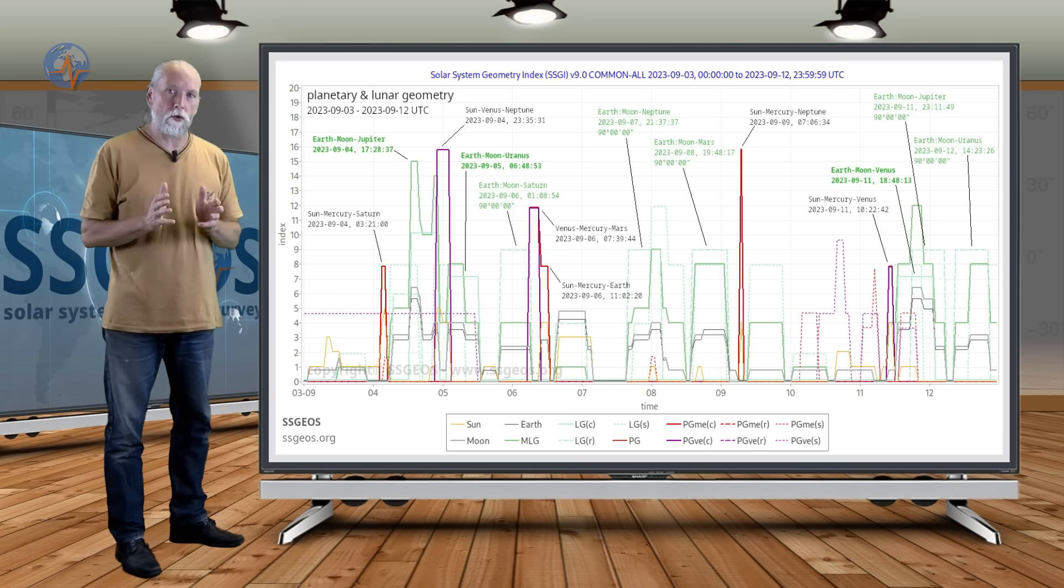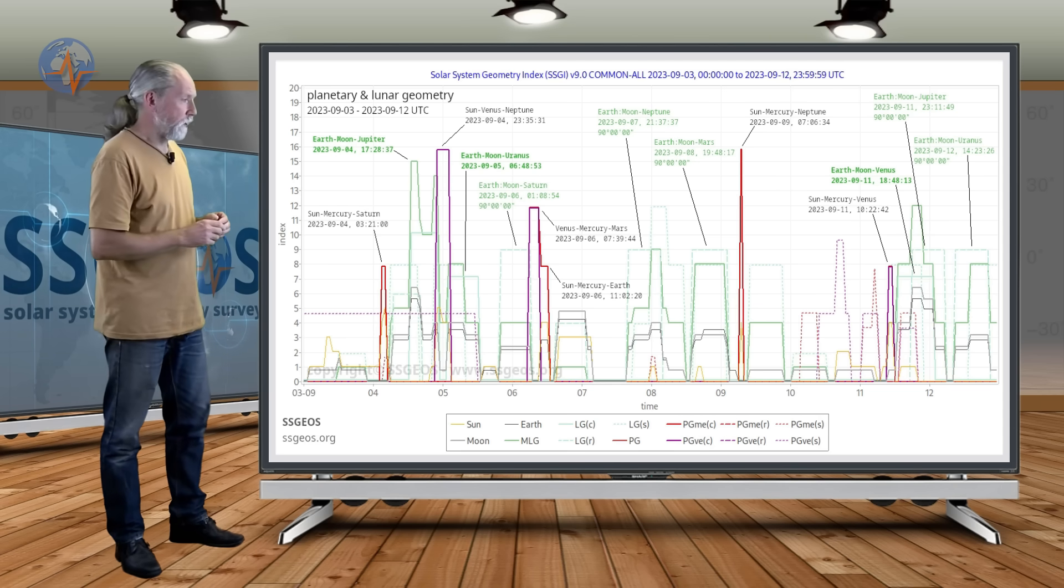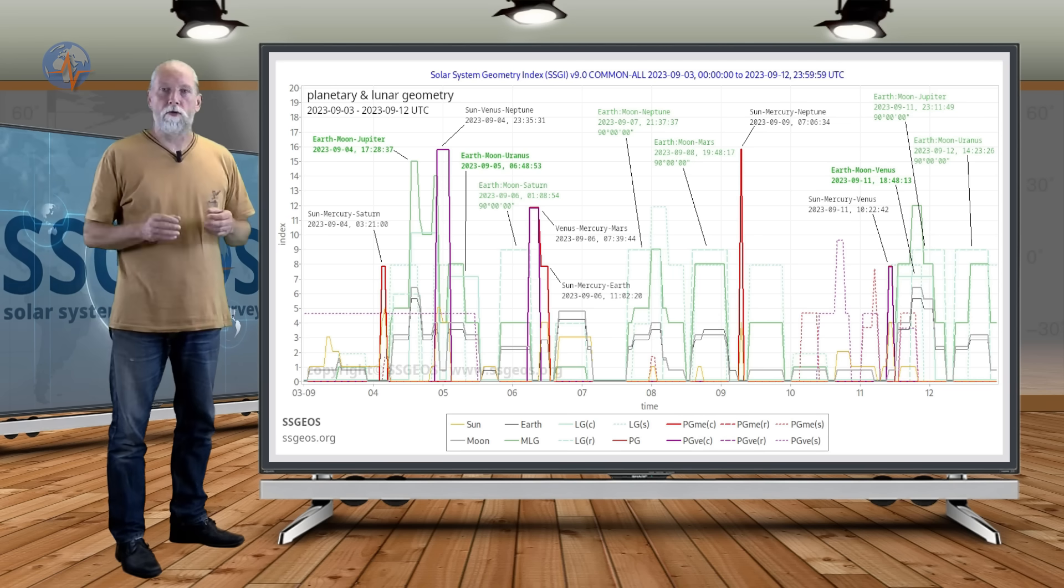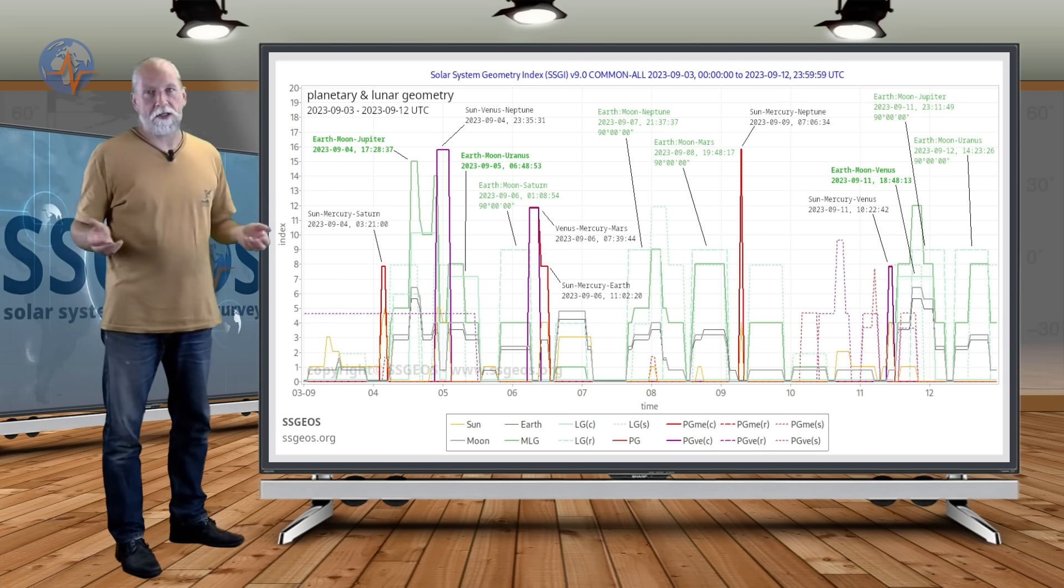The time between those two right angles will be shorter if we go further into September, but they are not in an opposite fashion like with Mars and Neptune, so it will be less critical.